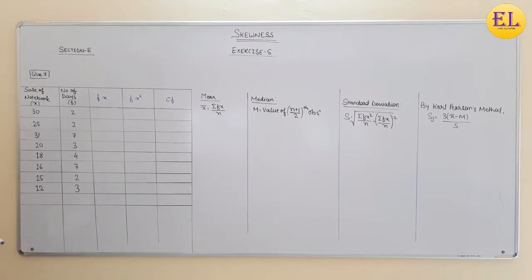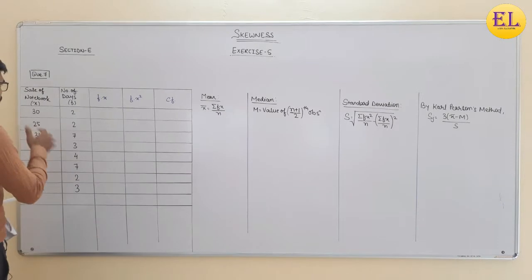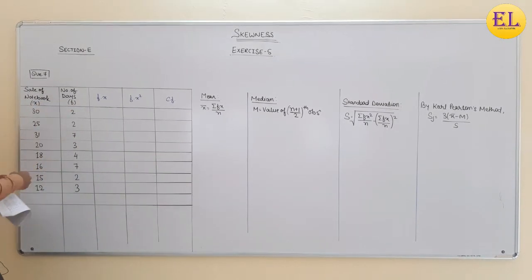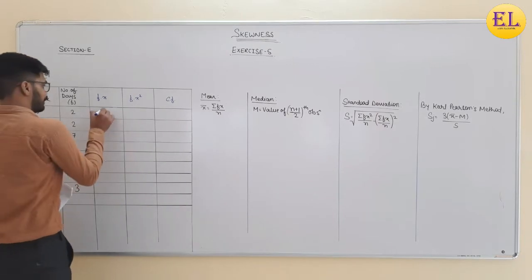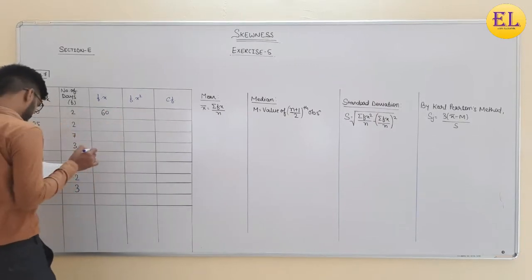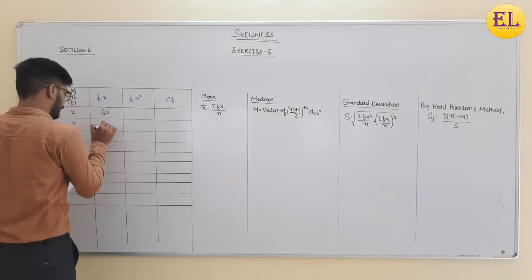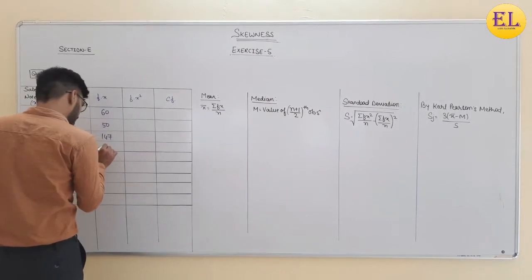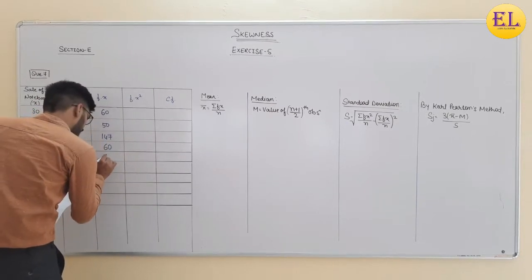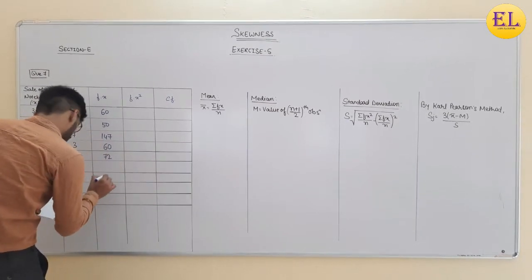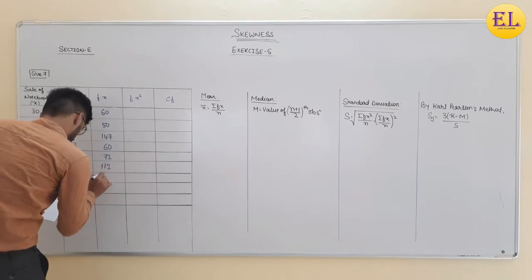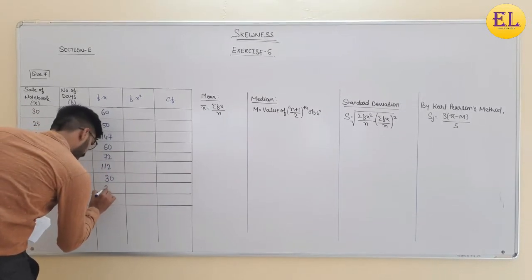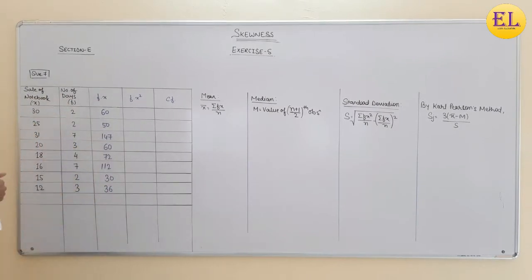First of all, we solve the table. We will create the fx column. The values of fx are 0, 60, 100, 147, 60, 72, 112, 30 and 36.